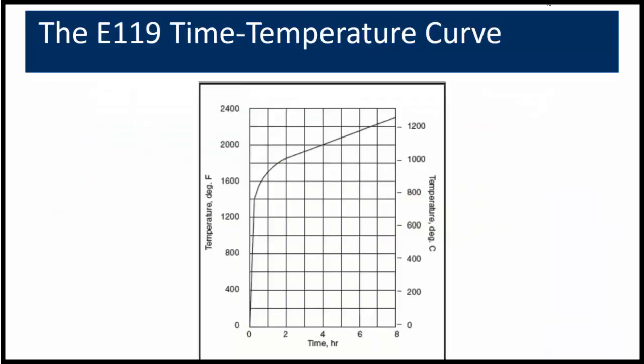At best, the test can be considered a relative index system to compare designs. It does not predict actual performance — hourly ratings are not what the real survival of the components will be under all conditions. This next slide is an illustration of the ASTM E119 standard time temperature curve. The furnace must achieve prescribed data points: 1,000 degrees at five minutes, 1,300 degrees at 10 minutes, 1,550 degrees at 30 minutes, 1,700 at one hour, 1,850 at two hours, 2,000 at four hours, and 2,300 degrees at eight hours or more.